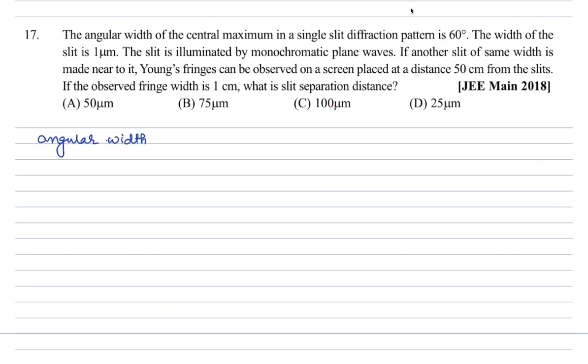Angular width of central maxima - the value given is 60 degrees. This means 30 degrees above and 30 degrees below, the first minimum is forming. So here is the first minima and here is the first minima. The distance between these two is what we call central maxima.